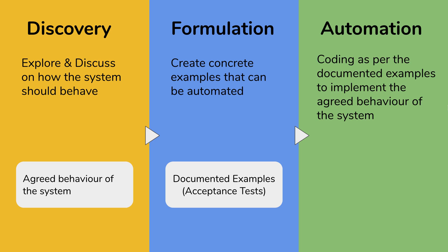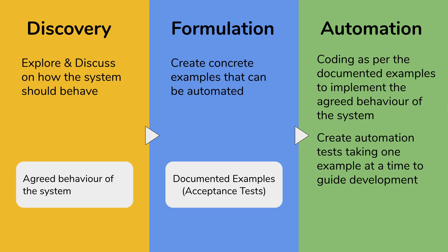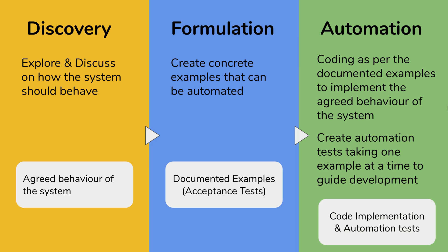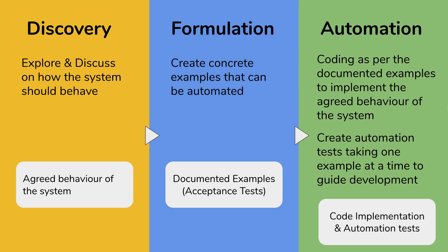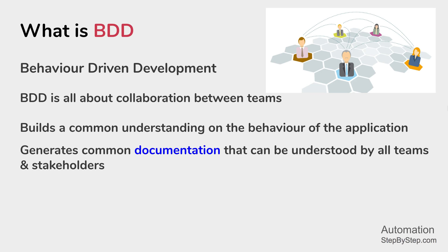Finally, we move to the Automation phase where coding is done based on the documented examples. Automation scenarios or tests are created taking one example at a time, and this guides the development. The outcome of this phase is the implemented code and the automation tests. So we have these three phases in the BDD process: Discovery, Formulation, and Automation.